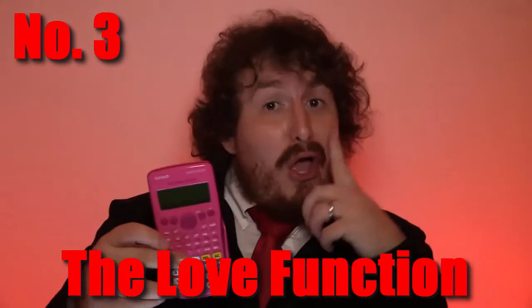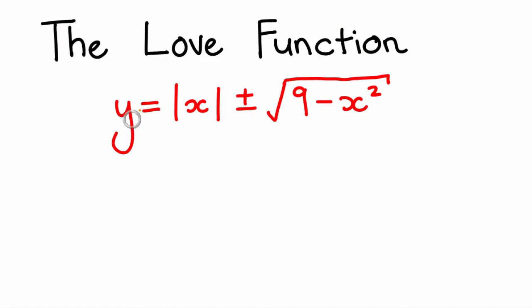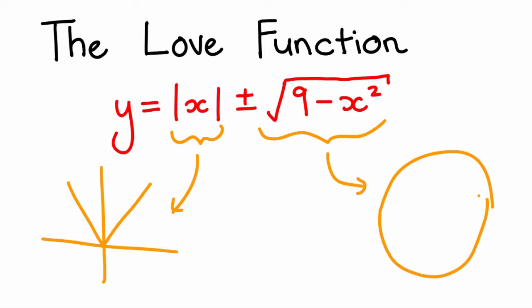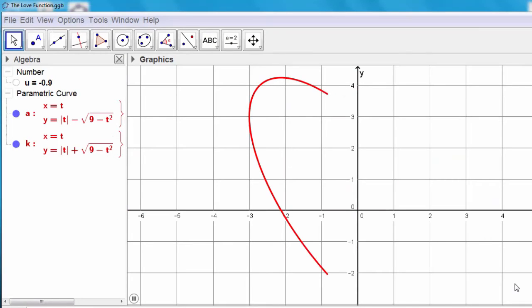Number three: the love function. Finally, if your love level is advanced and you take AP maths, then you can use the love function to declare your affection. Now if you only had y equals the absolute value of x, you'd end up with a funky little guy that looks like this. Whereas plus or minus the square root of nine minus x squared is simply the top and bottom half of a circle. But if you combine them, you get the most sexy function you have ever seen.